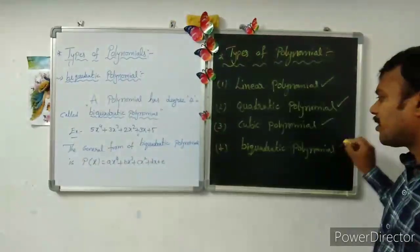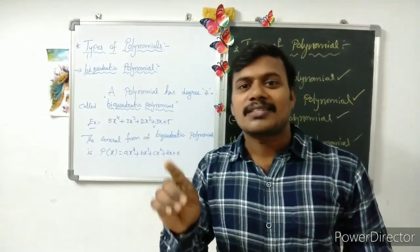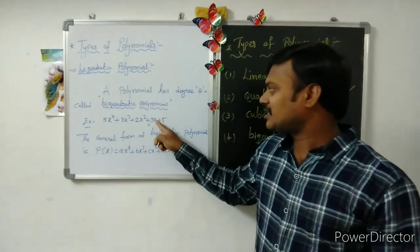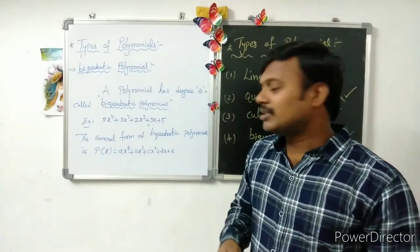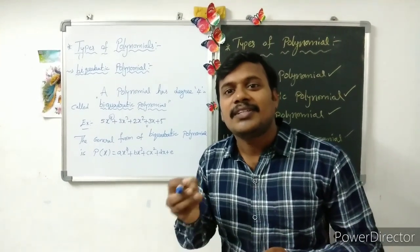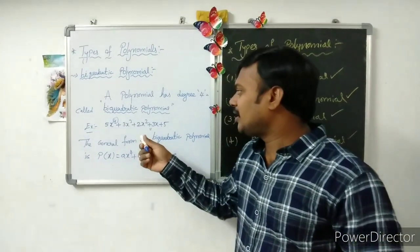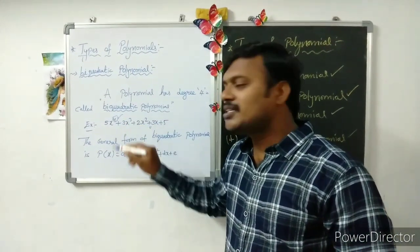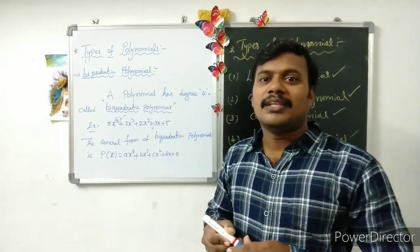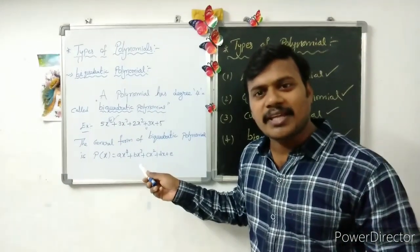A polynomial with degree 4 is called a biquartic polynomial. For example, 5x⁴ + 3x³ + 2x² + 3x + 5 — here the highest power is 4, so the degree of the polynomial is 4. The general form of a biquartic polynomial is P(x) = ax⁴ + bx³ + cx² + dx + e.